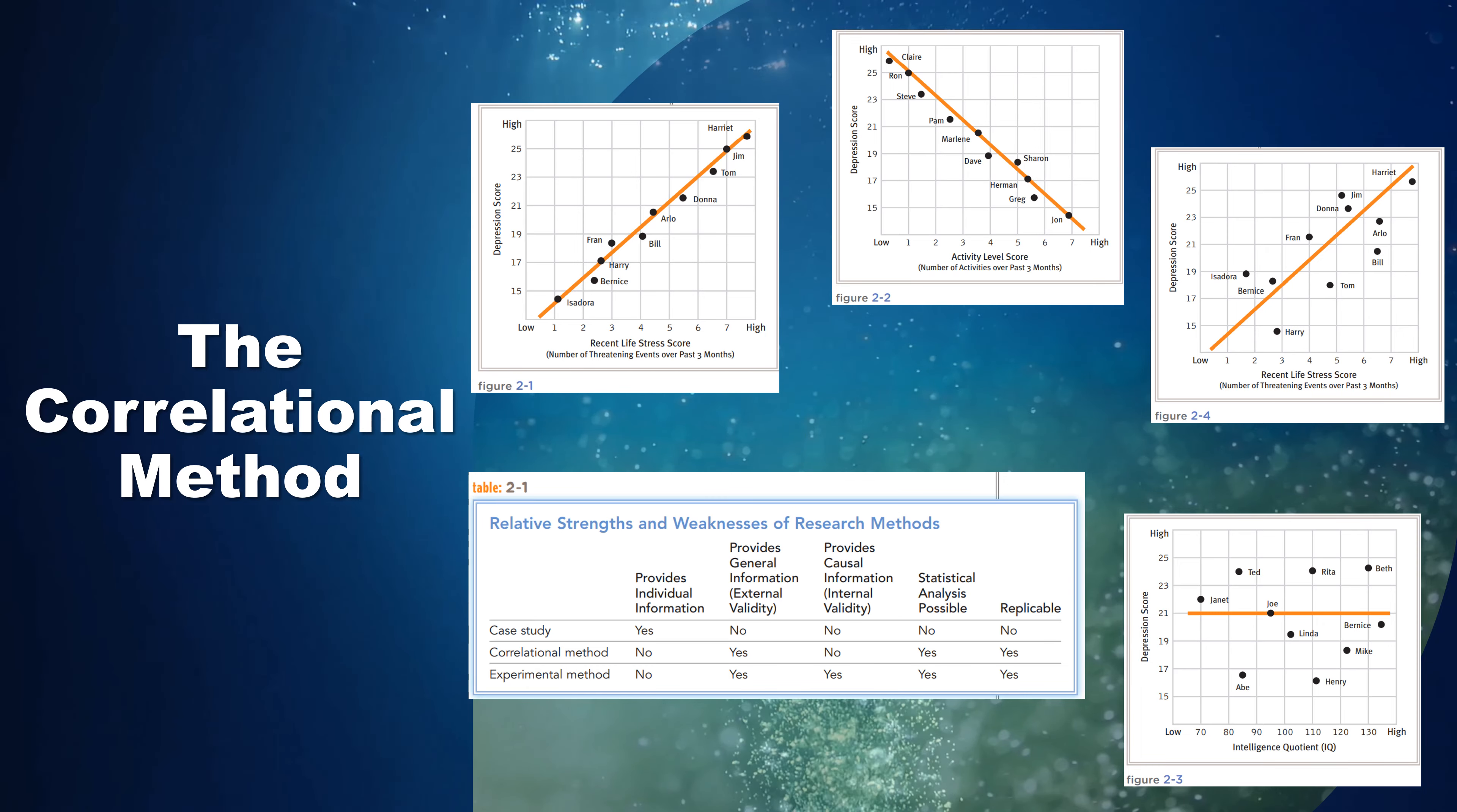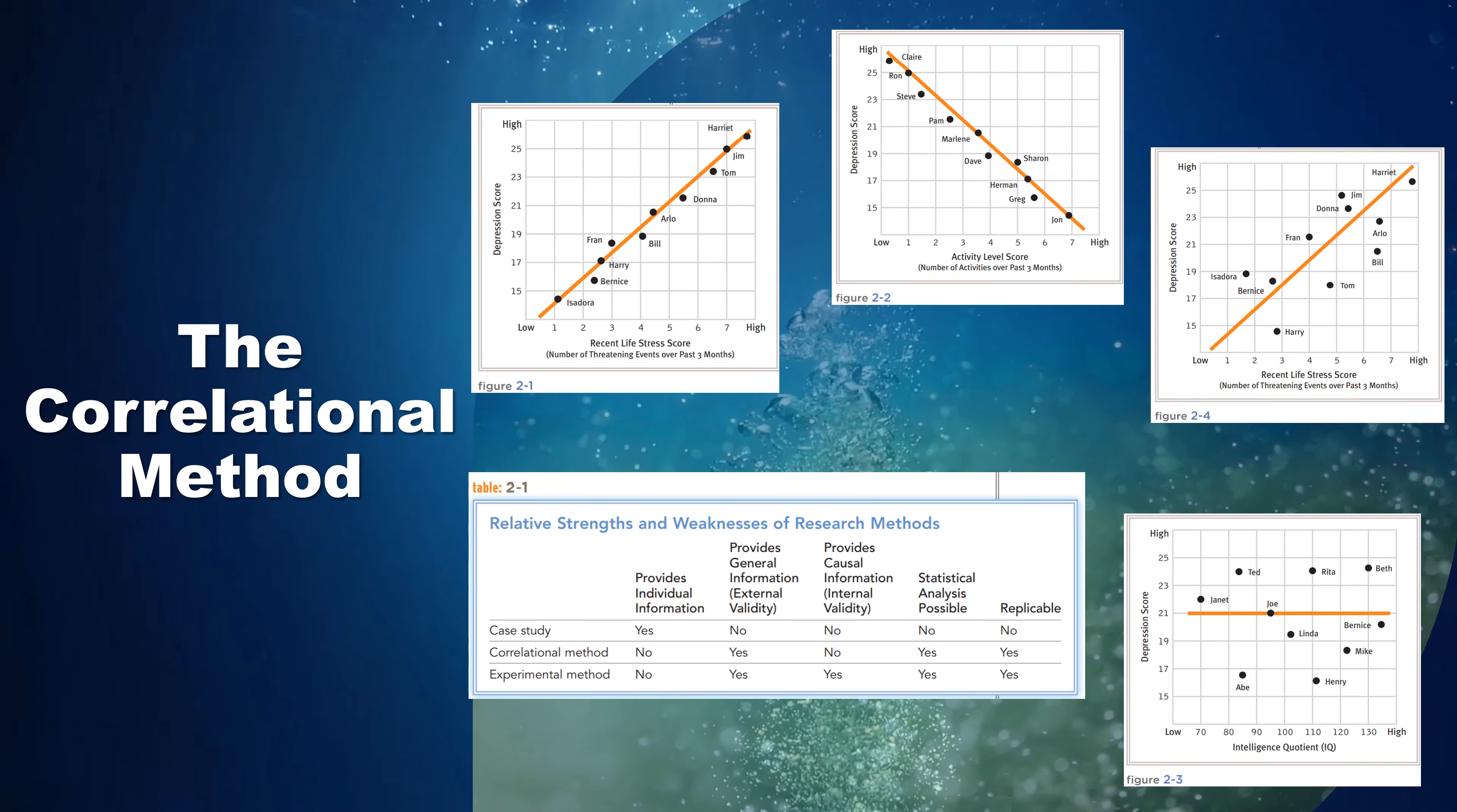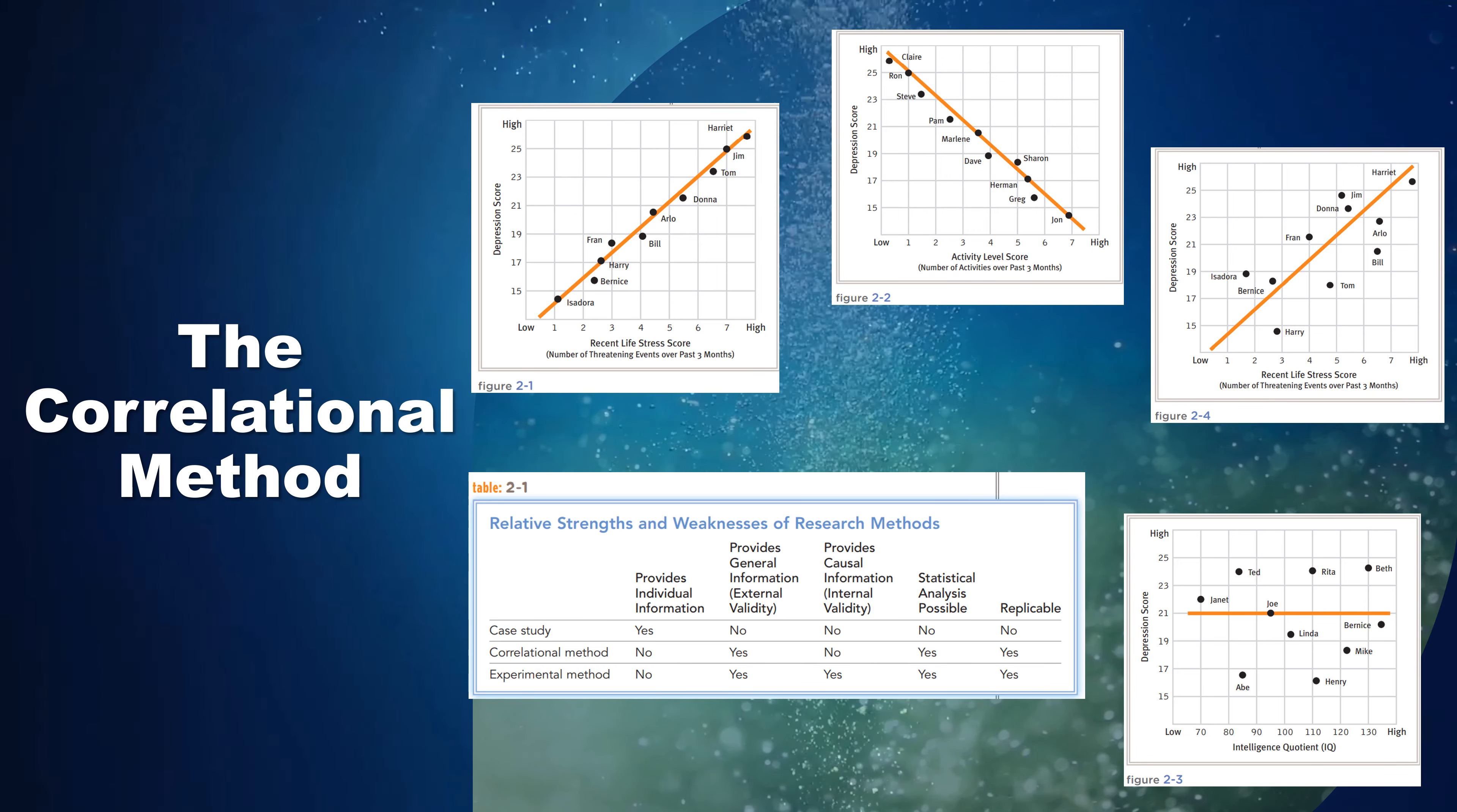Special forms of correlational research: epidemiological studies and longitudinal studies are two kinds of correlational research used widely by clinical investigators. Epidemiological studies reveal the incidence and prevalence of a disorder in a particular population. Incidence is the number of new cases that emerge during a given period of time. Prevalence is the total number of cases in the population during a given period. Prevalence includes both existing and new cases.